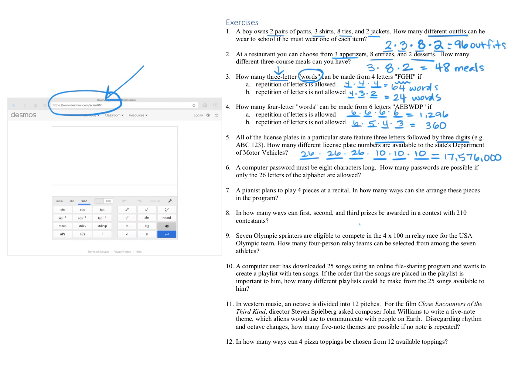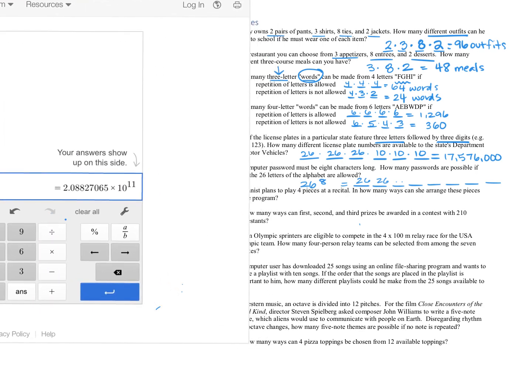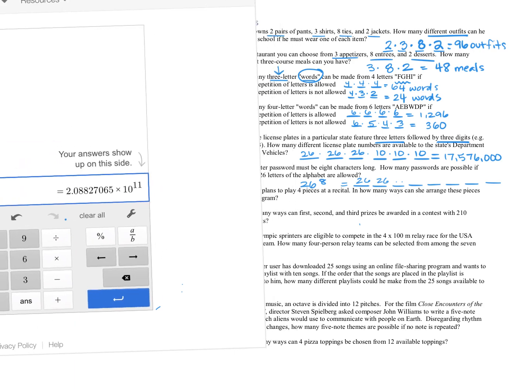So for number six, we have a computer password that must be eight characters long. How many passwords are possible if only the 26 letters of the alphabet are allowed? So really there's 26, 26, 26. We can write that little shorthand, 26 to the eighth power. And if we punch it in our calculator, if we entered 26 to the, use the A-B button, eight, we get that. Now it's kind of crazy. When we look at that, it has a really big 10 to the 11th there, but really this just means we're multiplying by a power of 10. This is scientific notation.